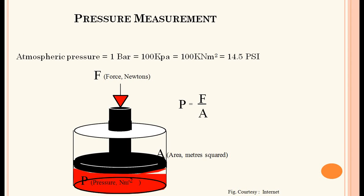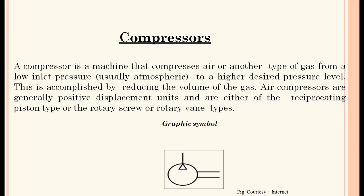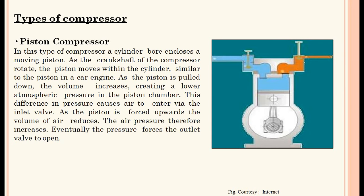Compressors: a compressor is a machine that compresses air or another type of gas from a low inlet pressure — usually atmospheric — to a higher desired pressure level. This is accomplished by reducing the volume of the gas. Air compressors are generally positive displacement units and are either of the reciprocating piston type, or rotary screw, or rotary vane type. The graphical symbol of the compressor is also shown.